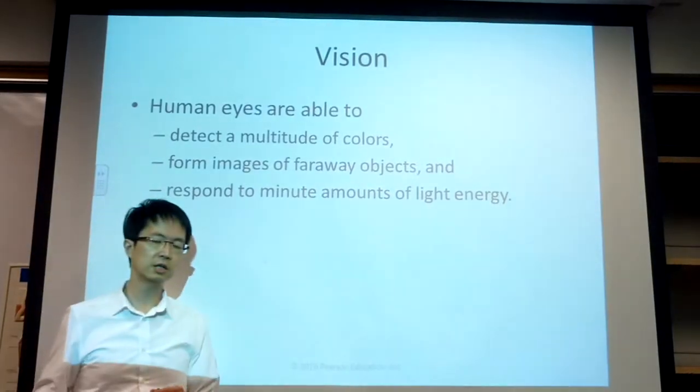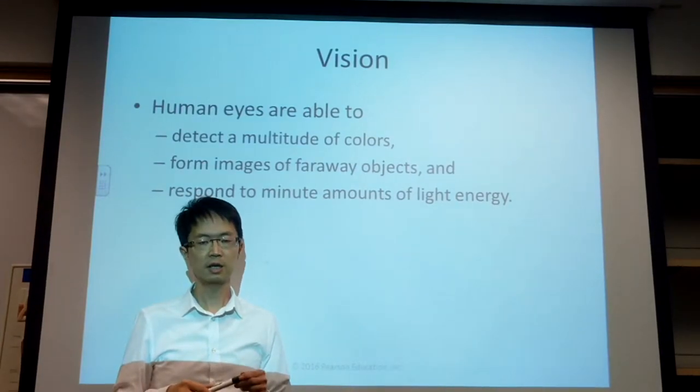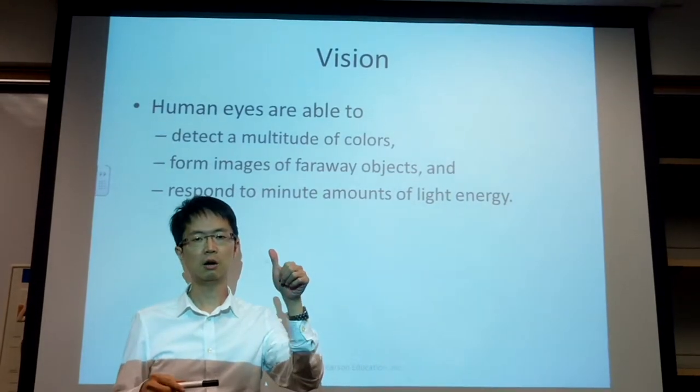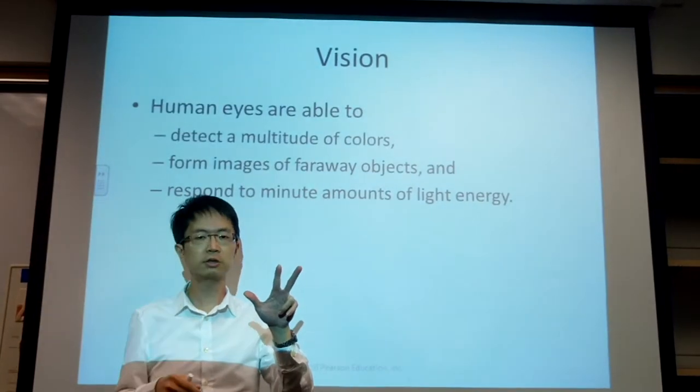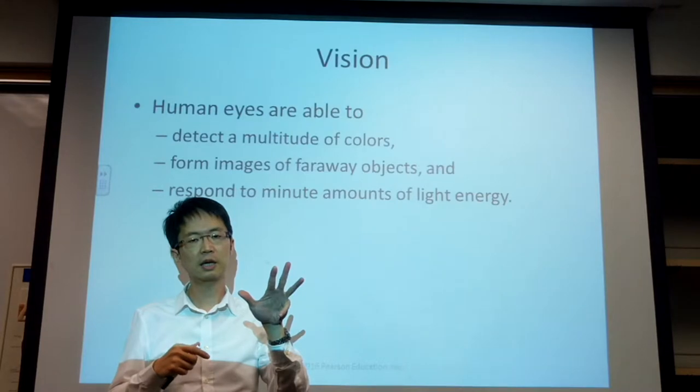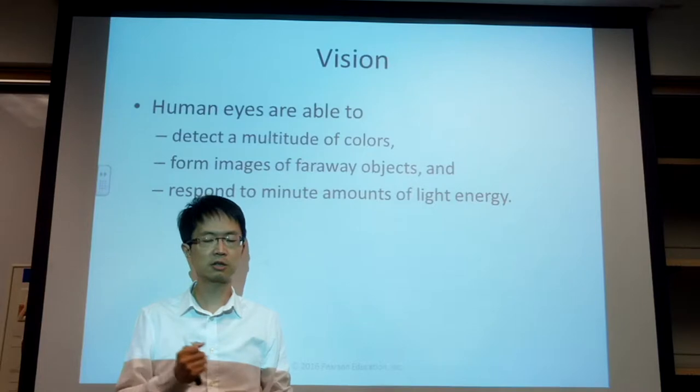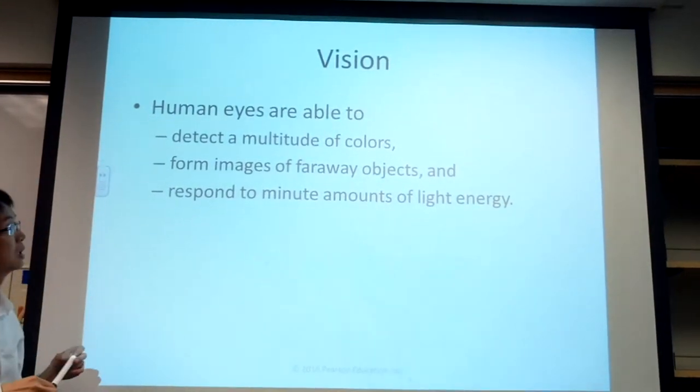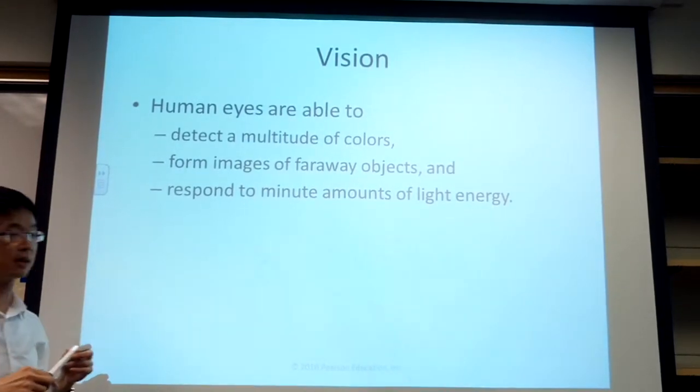We pick only the visual system as an example to talk about our special senses. As we know, we have five special senses: vision, audition (our ear), olfaction (our nose), gustation (our taste), and touch or somatic senses. We will talk about vision as an example.